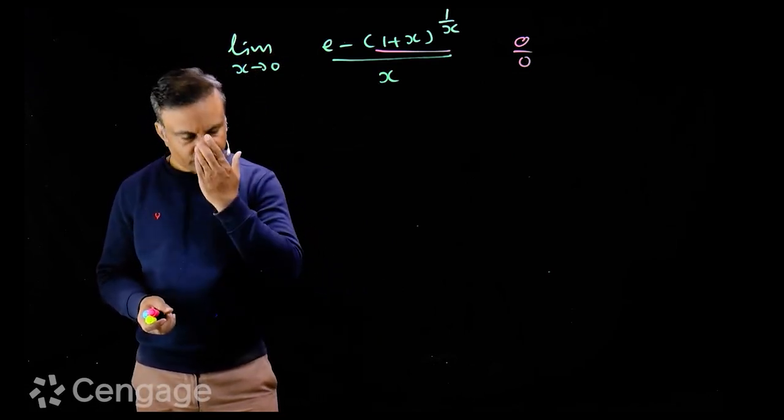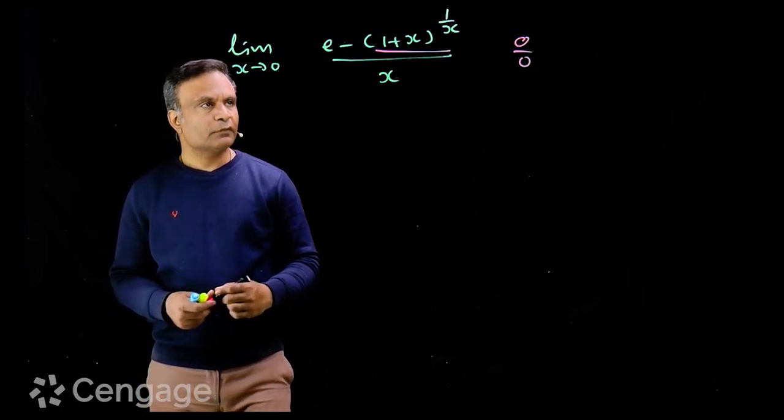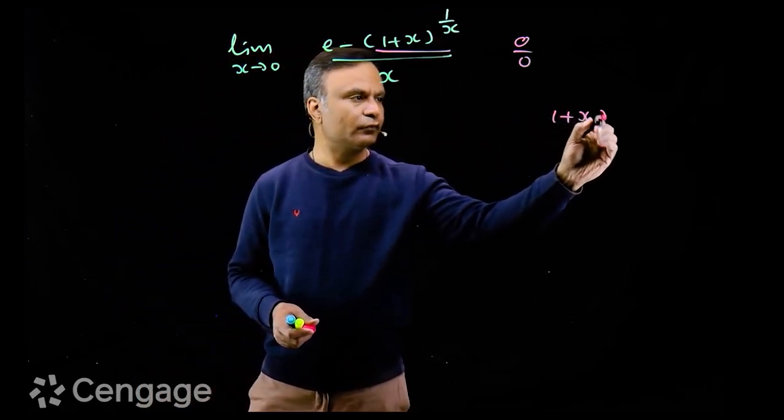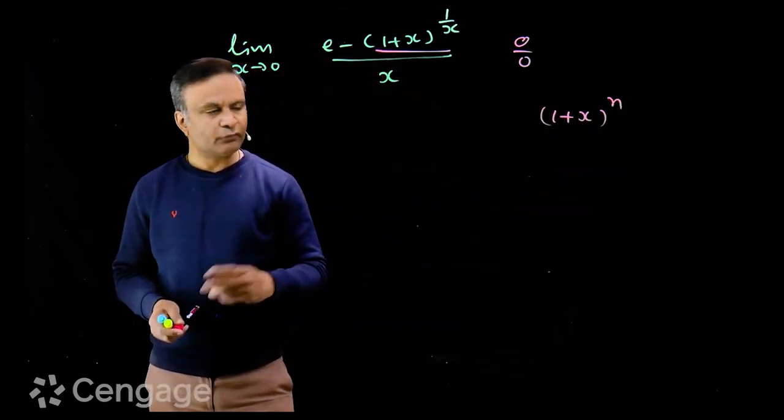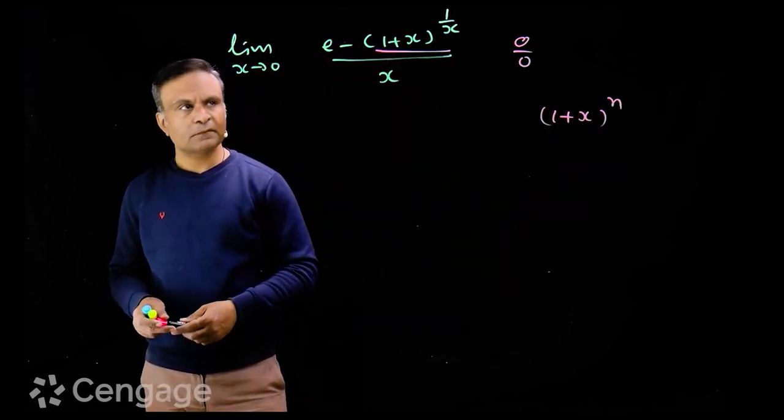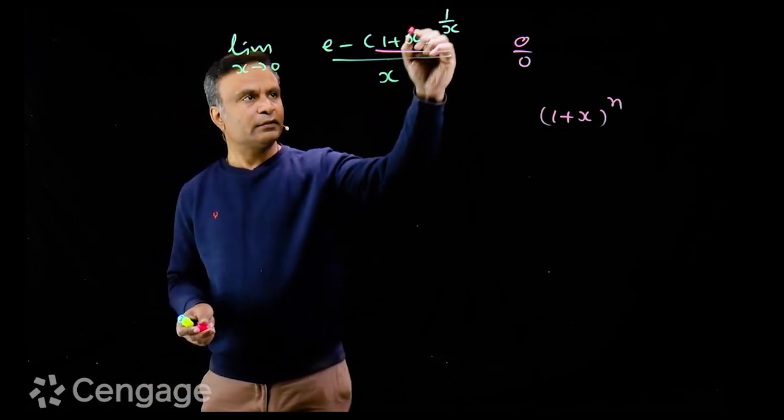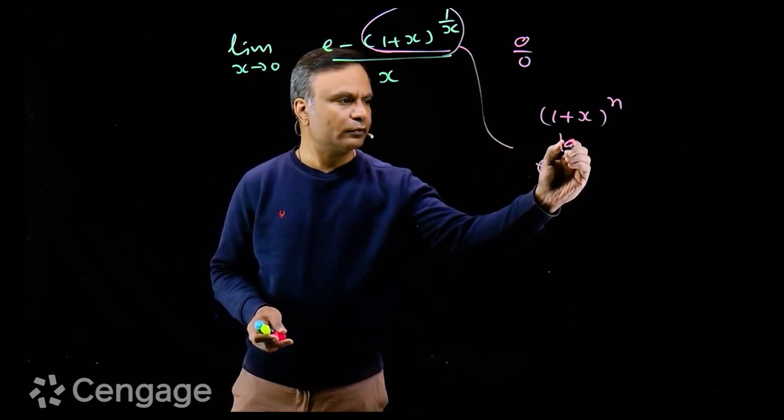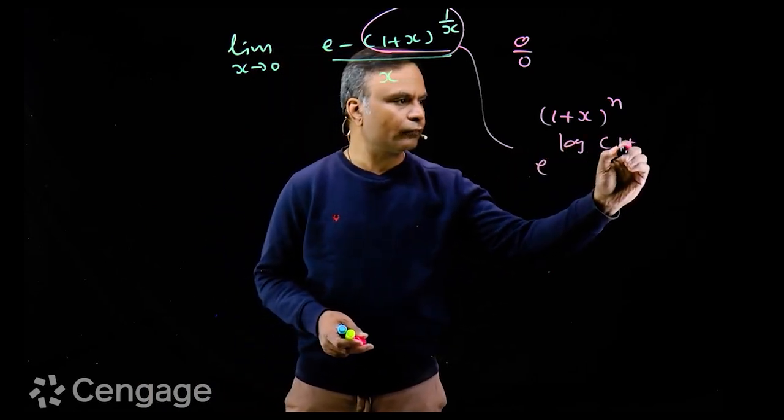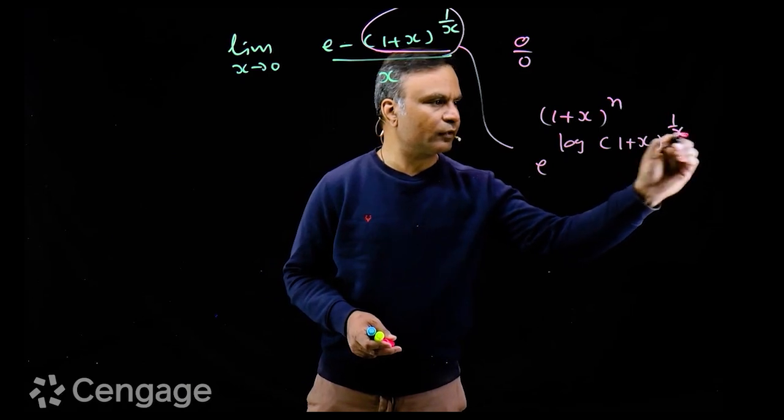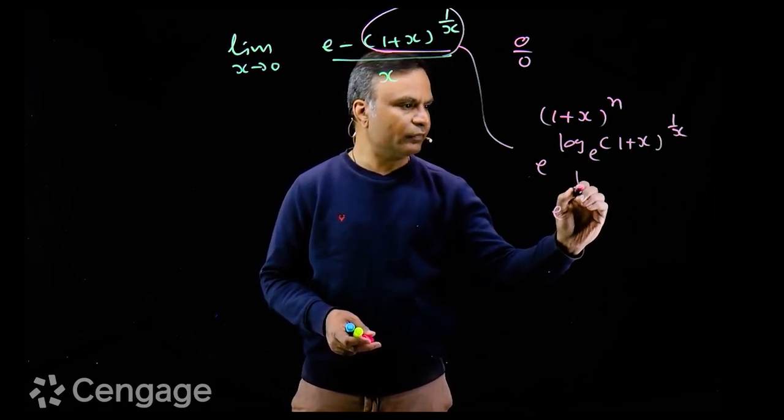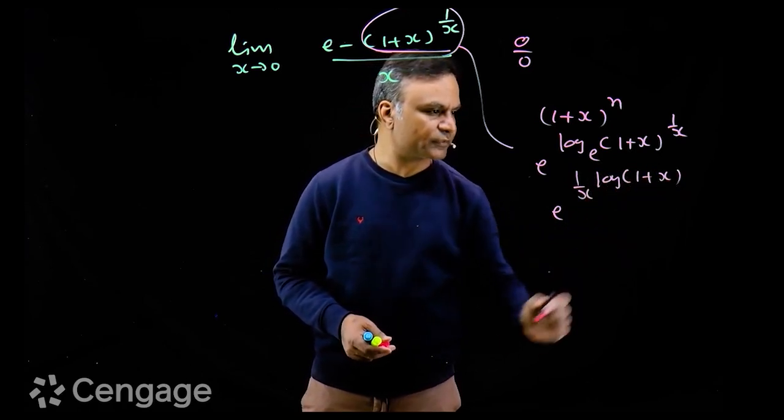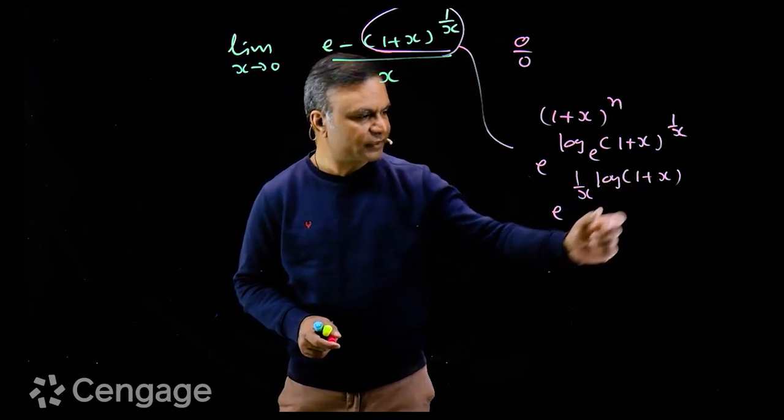Now, how can we use expansion formula here? We can use expansion formula for this function. We know the expansion formula for 1 plus x power n, but it won't work. We can write this expression as e power log of 1 plus x power 1 upon x to the base e, and this is e power 1 upon x multiplied by log 1 plus x. We can use expansion of log 1 plus x.